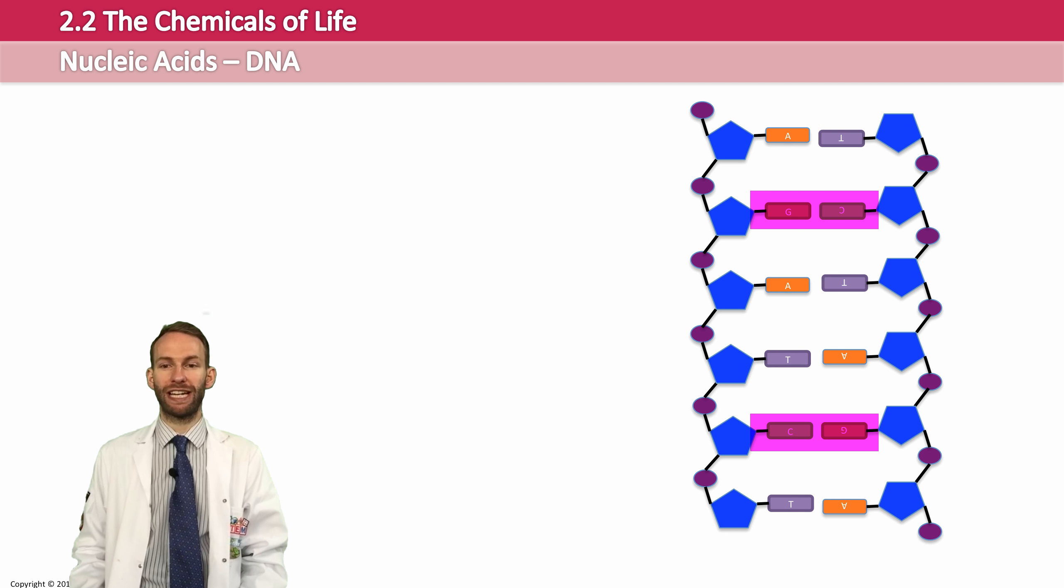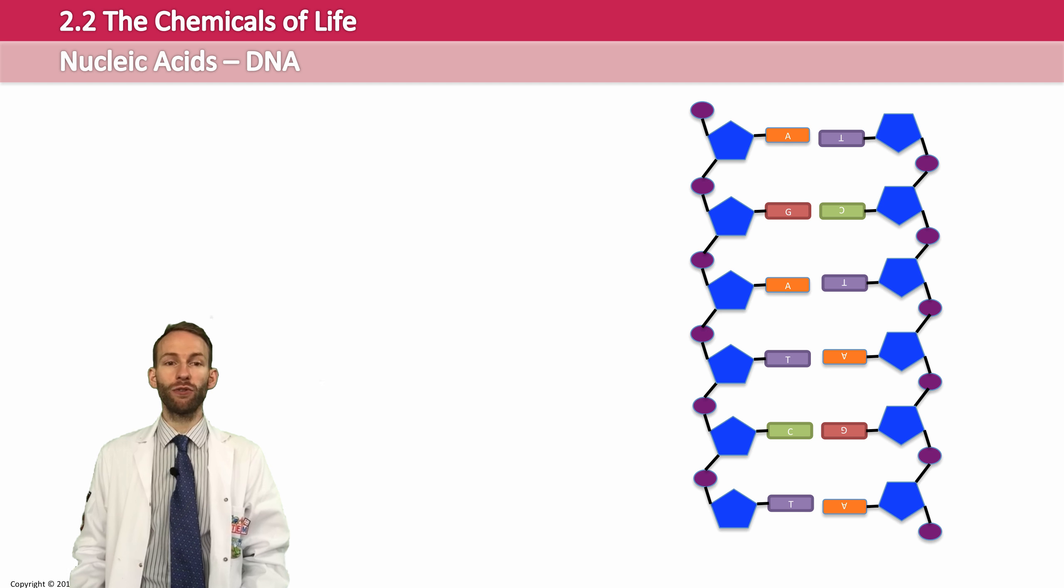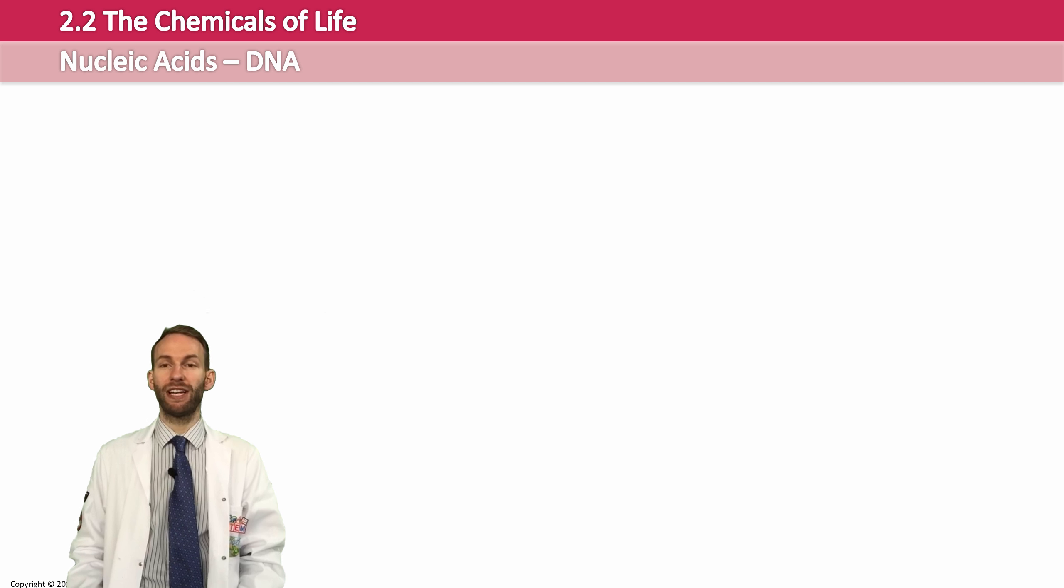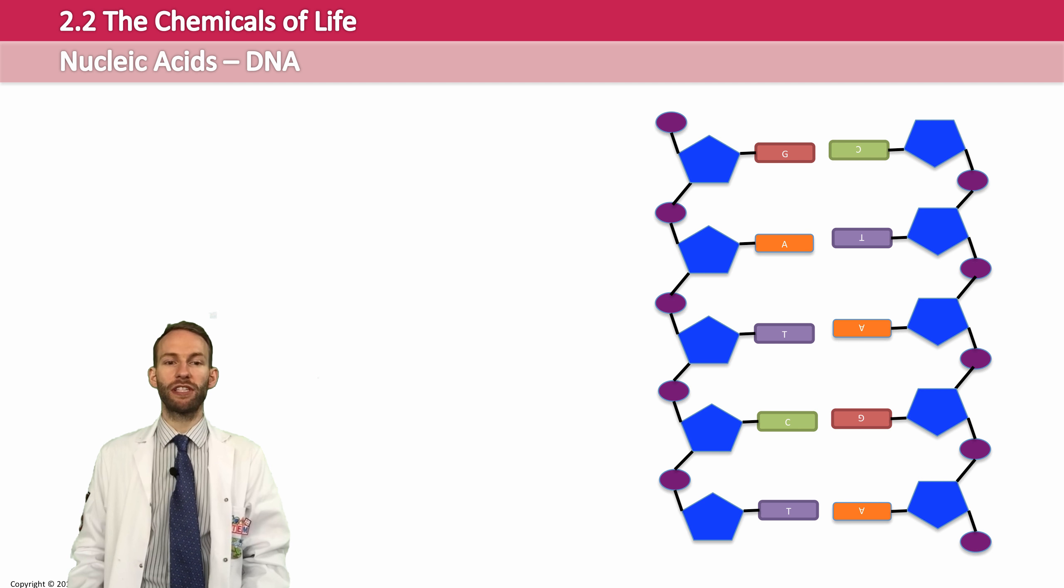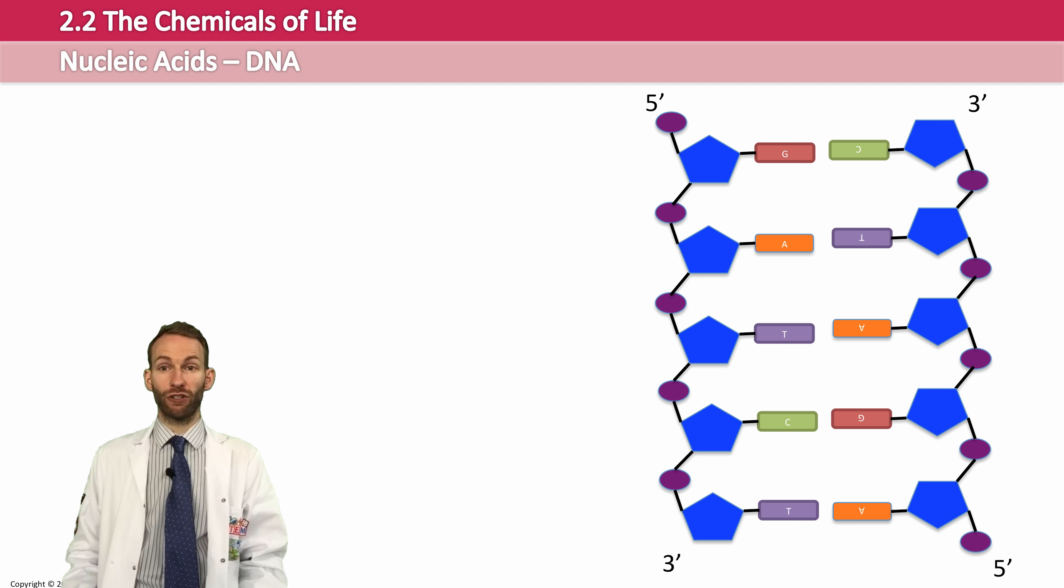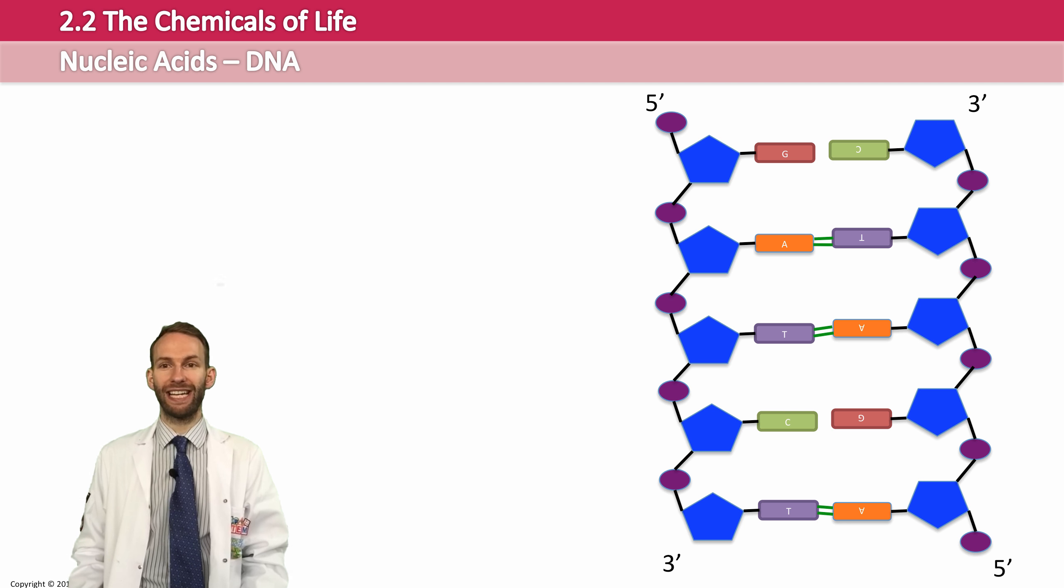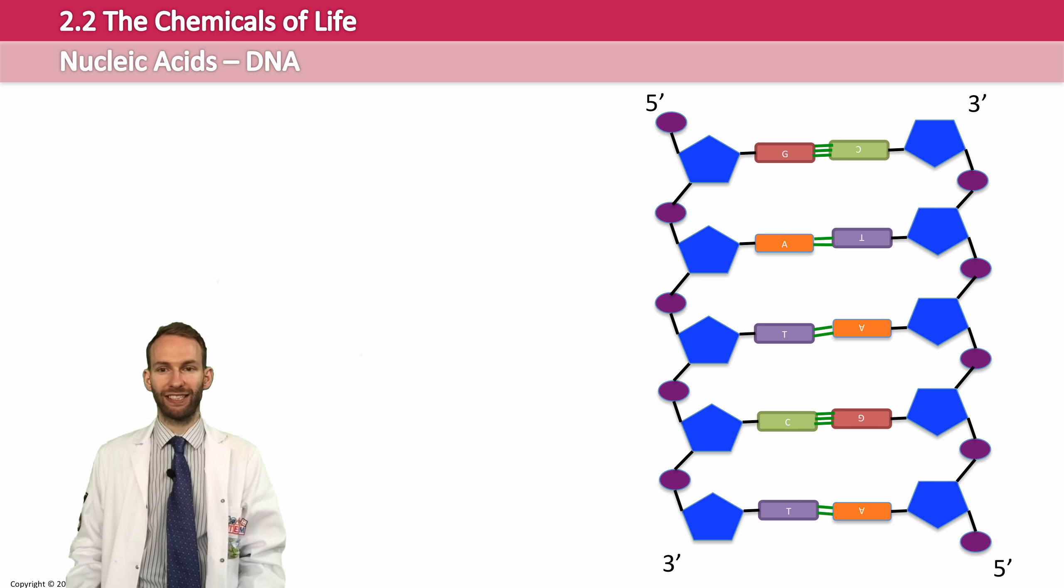It's what we call complementary base pairing. In order to explain the direction of the strand, we use the terms 5' and 3'. The end with the spare phosphate sticking out is the 5' end. The two strands are joined together by hydrogen bonds between the base pairs. There are two hydrogen bonds between A and T, and there are three hydrogen bonds between C and G.